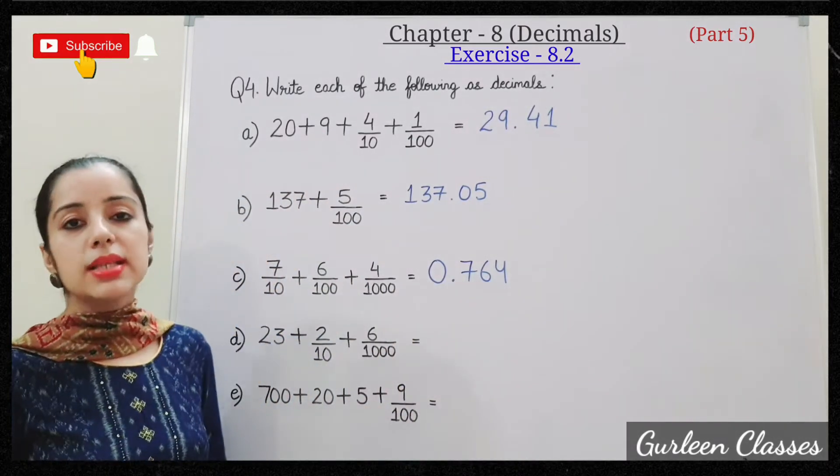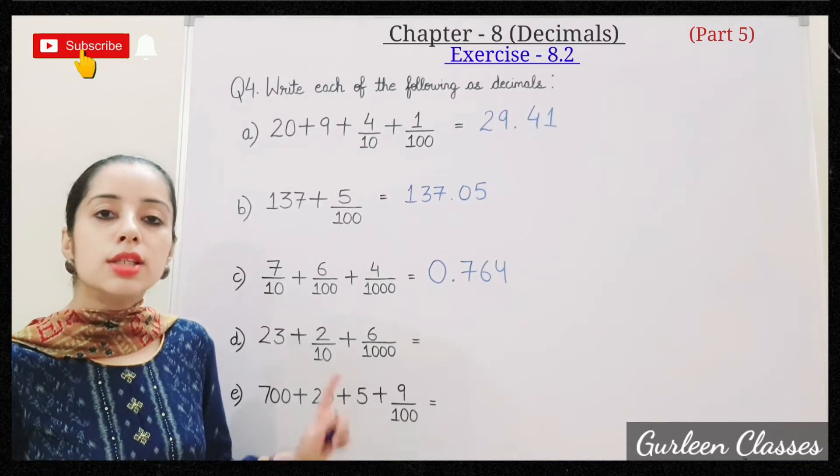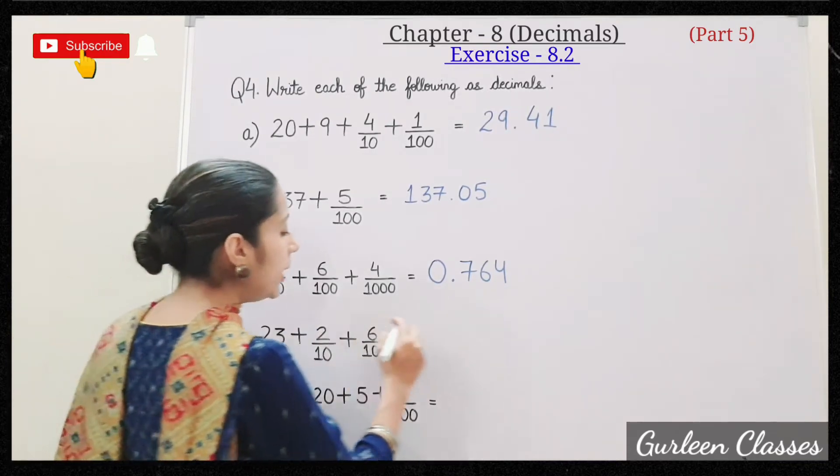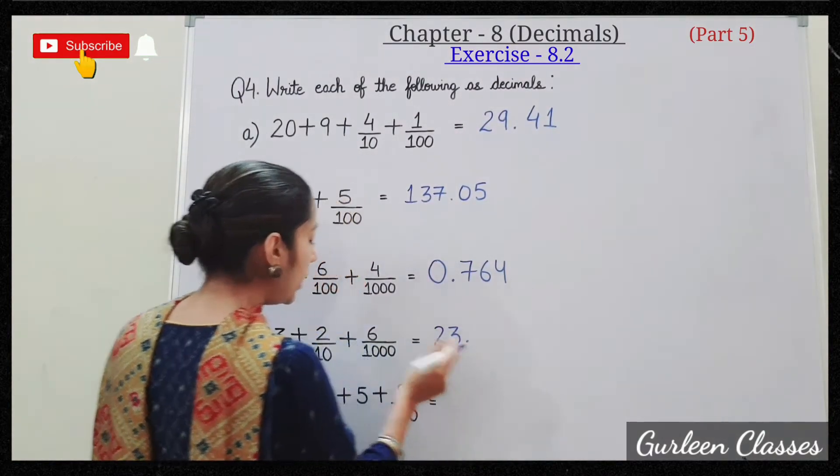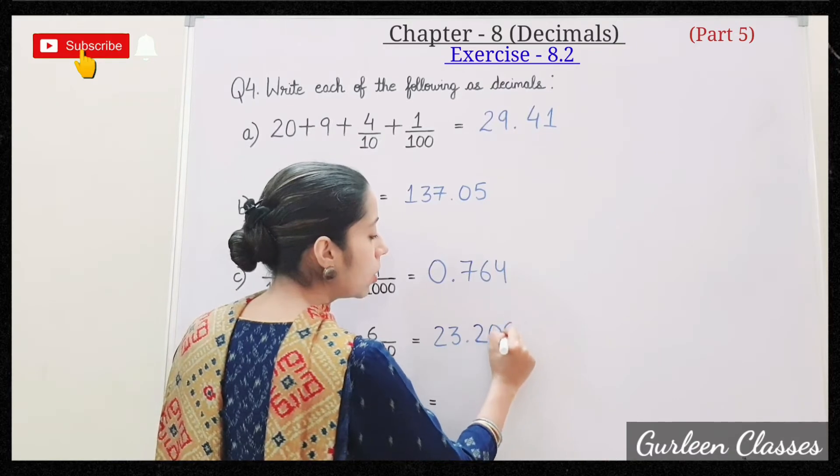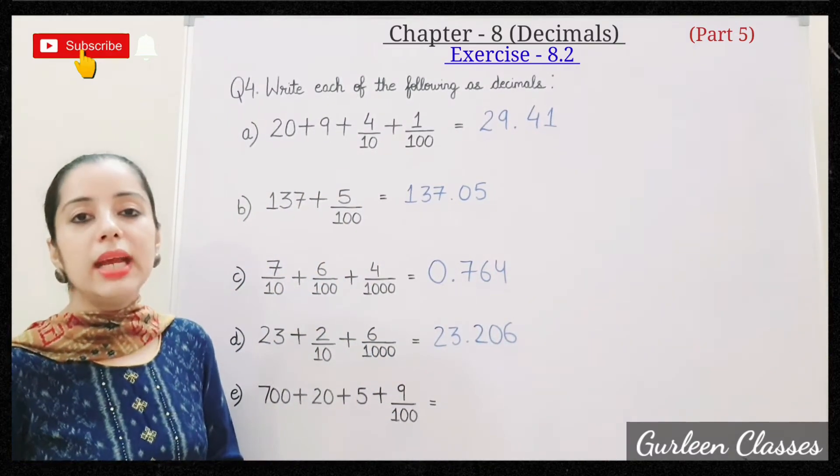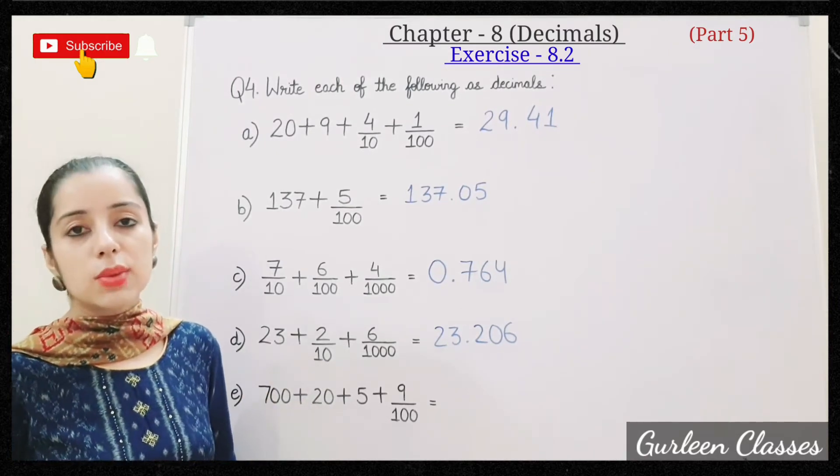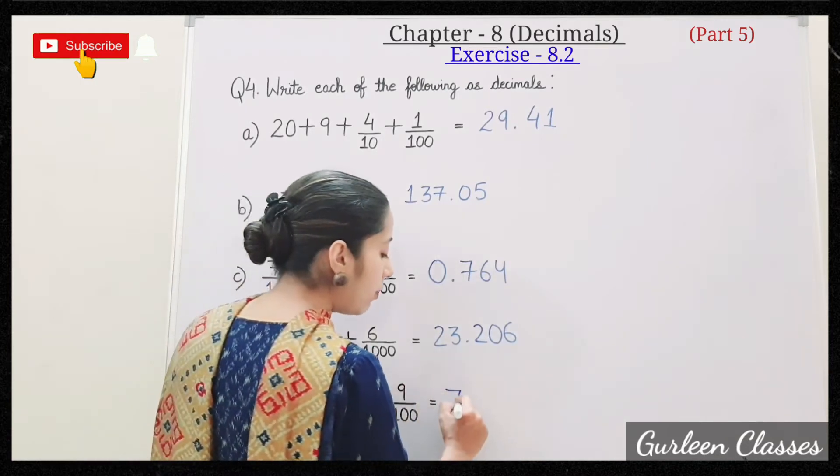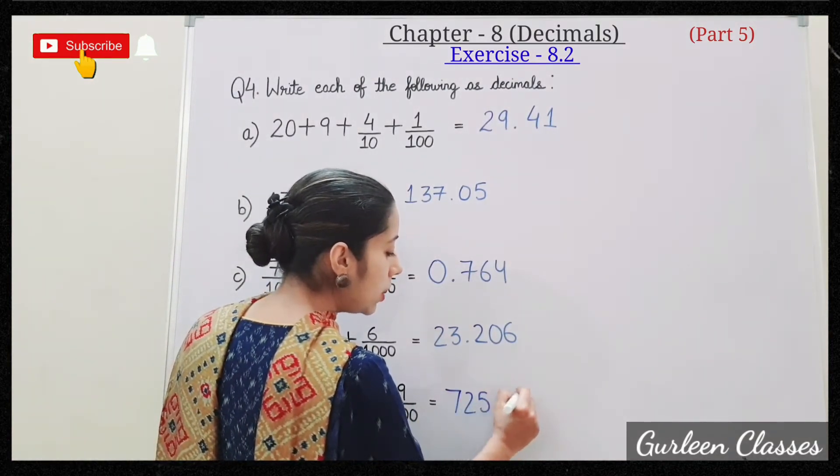D: 23 plus 2 upon 10 plus 6 upon 1000. So here hundredths place is missing, we will put 0. So 23.206. Next part: 700 plus 20 plus 5 plus 9 upon 100. So here tenths place is missing. 725 is the whole number part, 0.09.